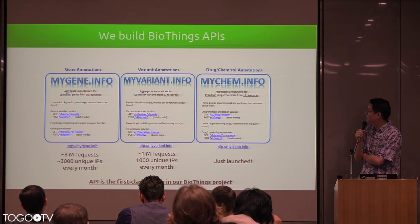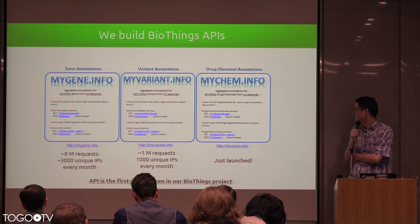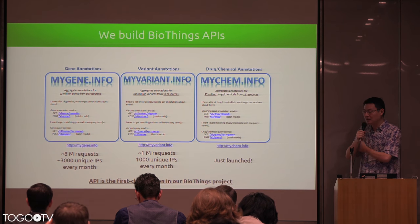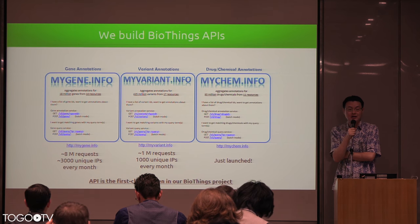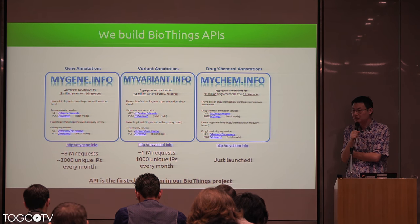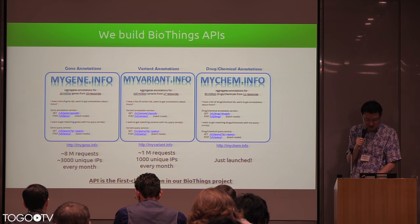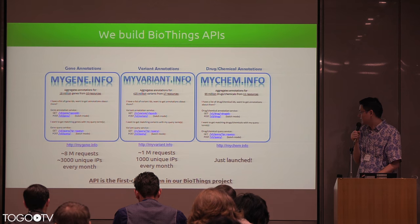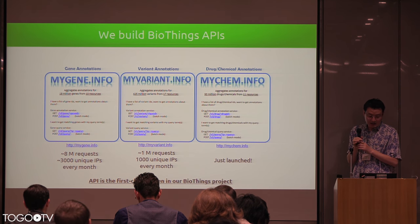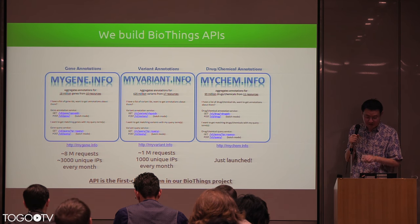MyVariant was the second one we launched and now has 1 million requests per month from about 1,000 to 2,000 unique IPs. Recently we launched MyChem.info, focused on chemical and drug compounds, and we just launched it and hope to see users coming as we go. I also want to mention that the API is our first-class citizen — we want to focus on the API itself and let users build their applications on top of it.